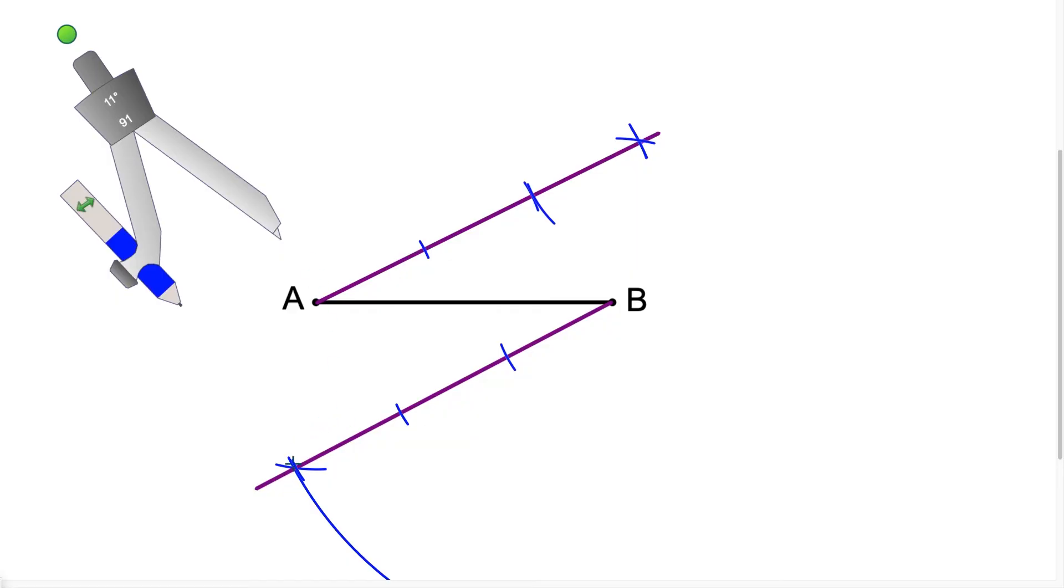So then the last step here to this construction is I'm just going to connect this point to this point here and then I'm going to connect this point here with this one. So notice I got one, two, three, four points to connect.